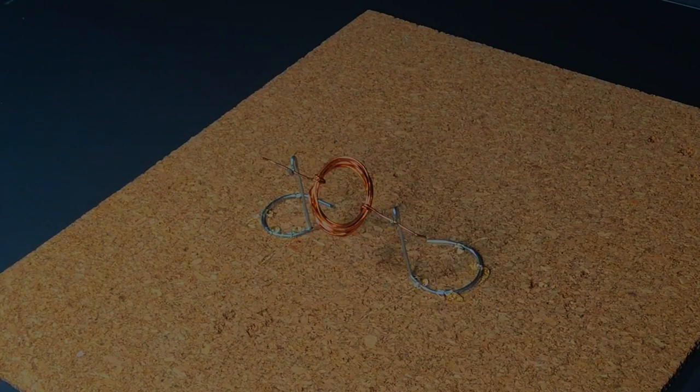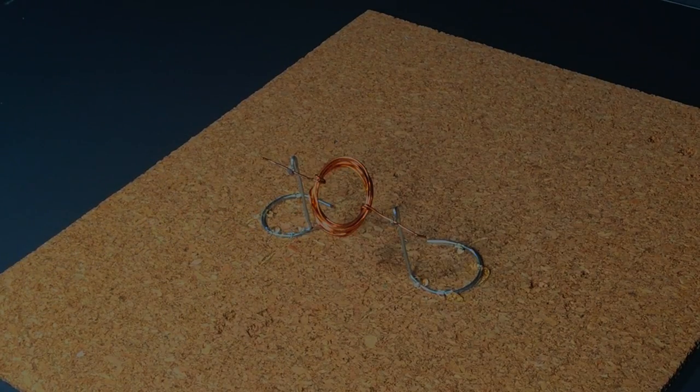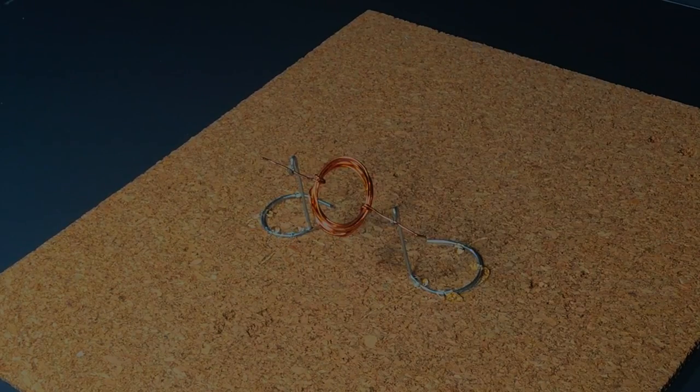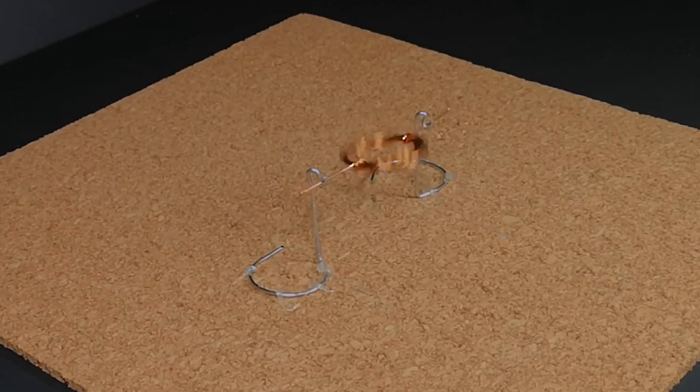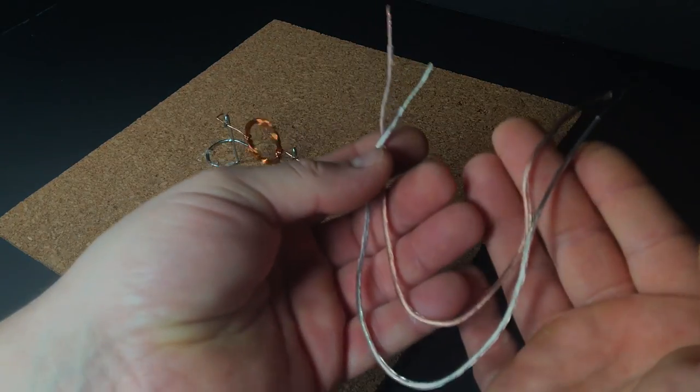When chemical bonds are broken or made, energy is released or taken in, often as heat that is either absorbed or released by the chemical system. This change in energy is known as the change in the internal energy of a chemical system.